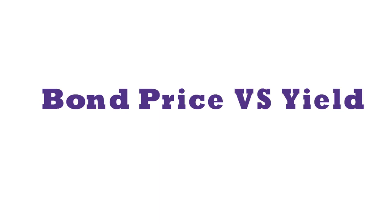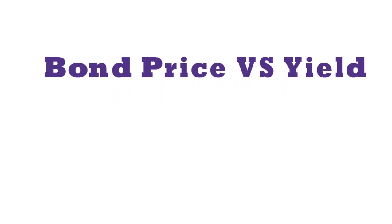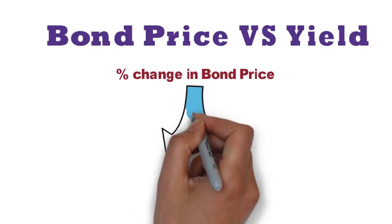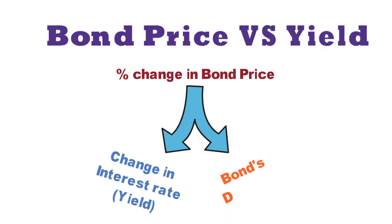In other words, the calculation will measure the interest rate risk of a bond. The percentage change in bond's price is a function of changes in interest rate and bond's duration.